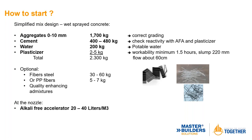Plasticizers: 2 to 5 kg/m³ depending on concentration and type. Workability minimum is usually one and a half hours, targeting a slump around 200 to 220 mm or a flow of about 60 cm. Other additions: steel fibers 30 to 60 kg/m³, polypropylene fibers 5 to 7 kg/m³, and potentially shrinkage-reducing admixtures and other technologies. At the nozzle: alkali-free accelerator, typically around 20 to 40 liters per cubic meter depending on dosage and cementitious material content.